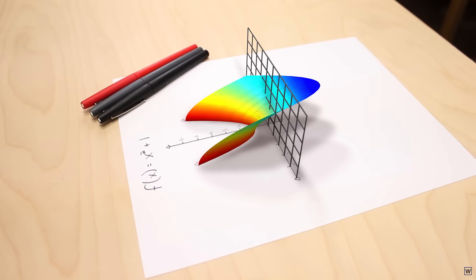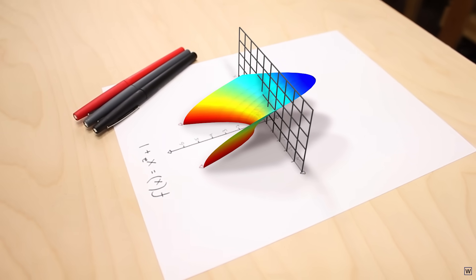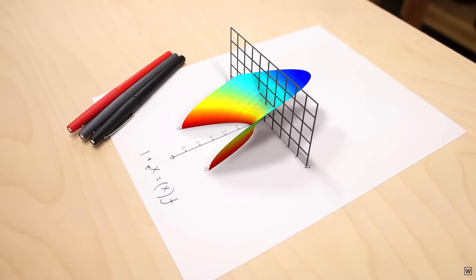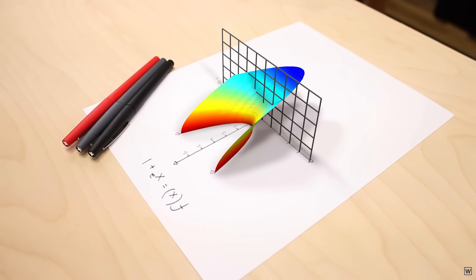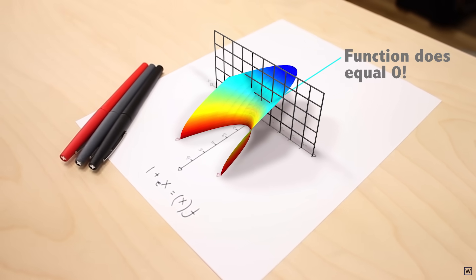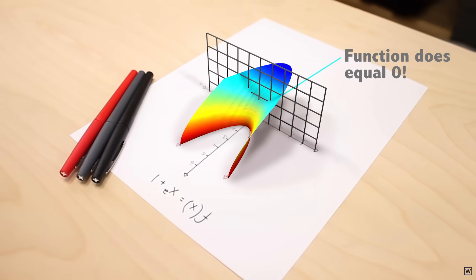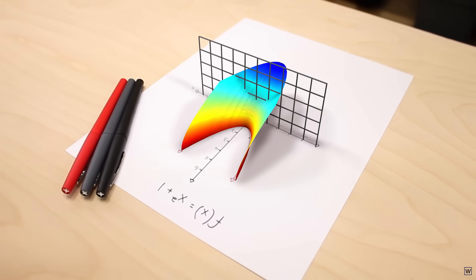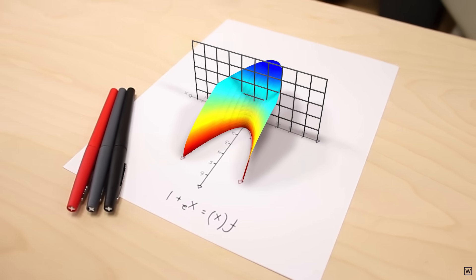Now that our input numbers are in their full two-dimensional form, we can see how our function, x squared plus 1, really behaves. Our function does cross the x-axis. We were just looking in the wrong dimension. So why is this extra dimension that numbers possess not common knowledge?